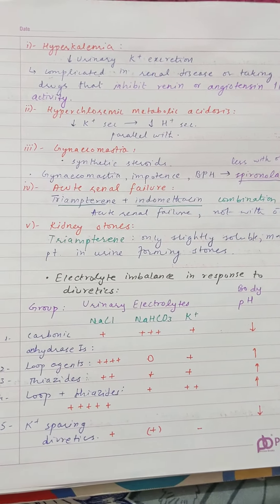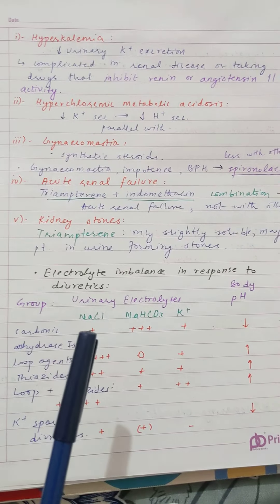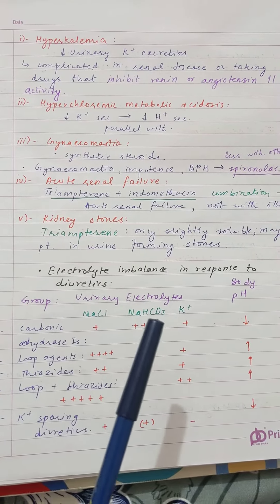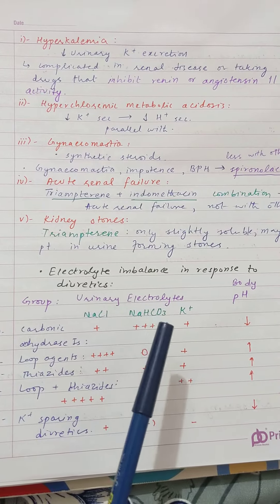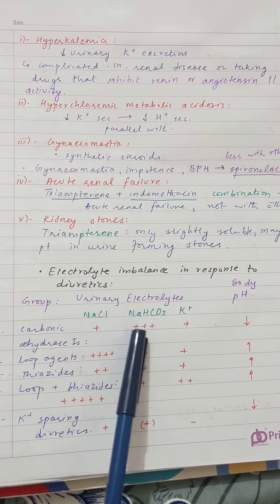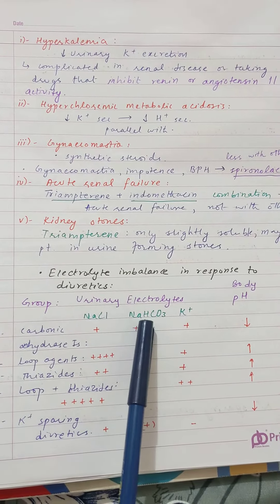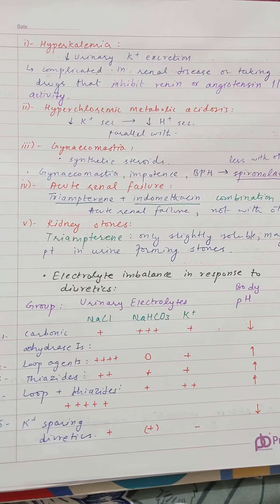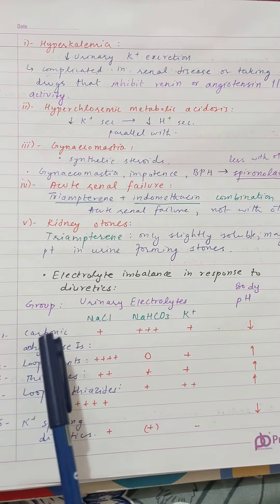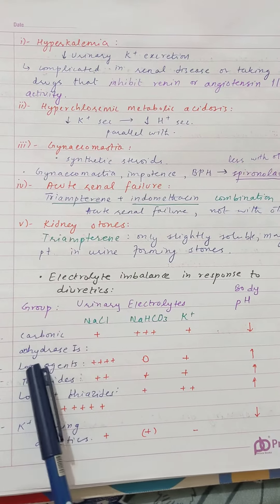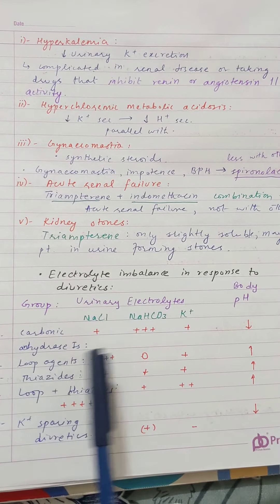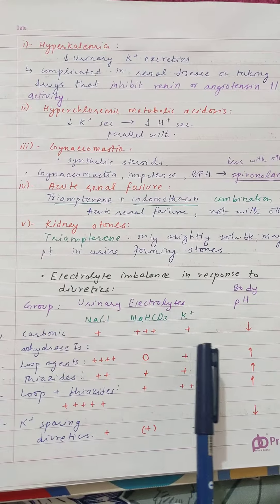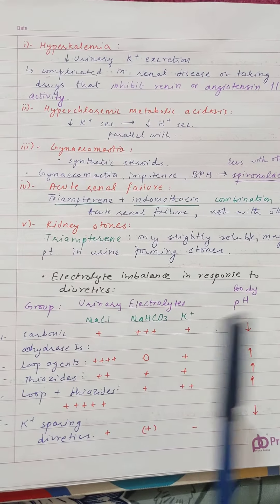We know that NaCl urinary excretion — you can see that the urinary bicarbonate, sodium, and potassium excretion is very minimal when we give NaCl. NaCl urinary excretion is much less than a big excretion, but potassium is not a big excretion.